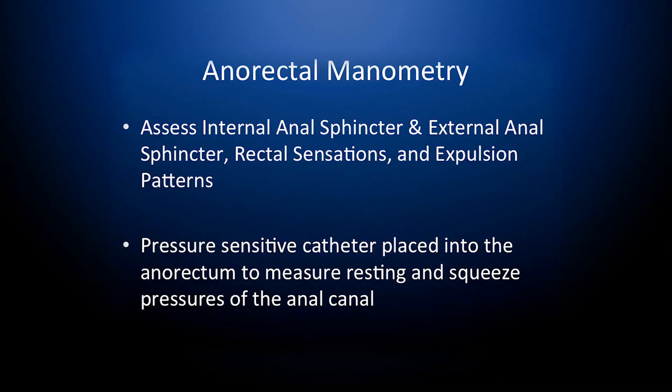Anorectal manometry is used to assess the internal anal sphincter and external anal sphincter, as well as rectal sensations and expulsion patterns. A pressure sensitive catheter is placed into the anorectal to measure resting and squeeze pressures of the anal canal. In the next segment, we'll demonstrate how to perform anorectal manometry with balloon expulsion.